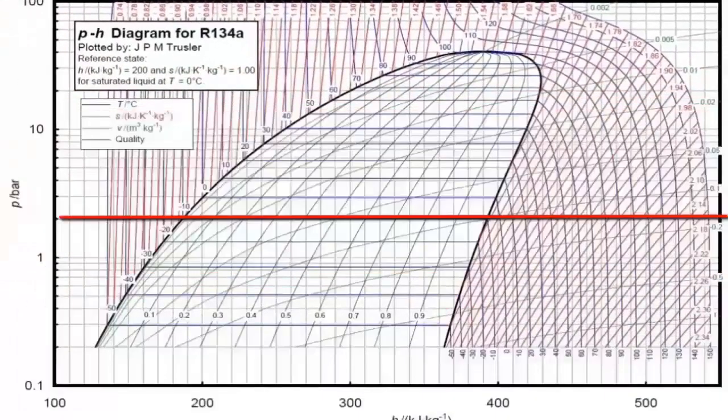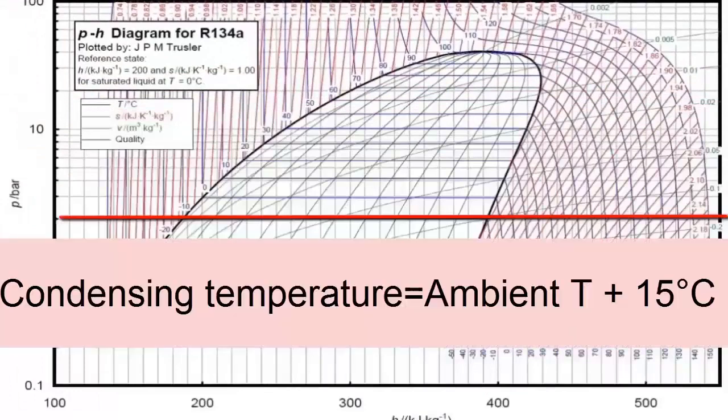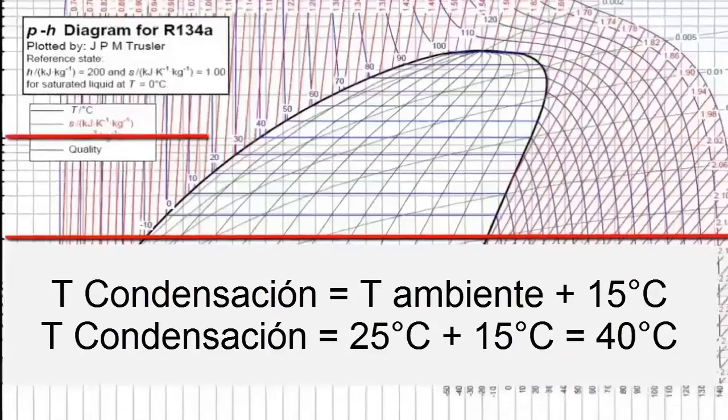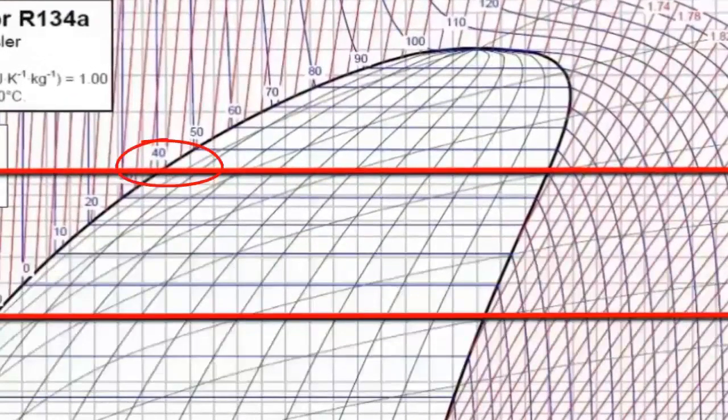Now to find the condenser pressure of the system, it is required to know the temperature of the outside environment and add 15 degrees to this value. For example, for an external environment temperature of 25 degrees Celsius, adding the 15 degrees mentioned, there is a condensation temperature of 40 degrees.